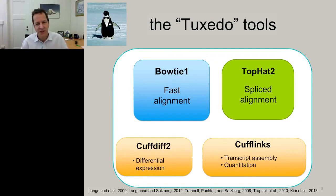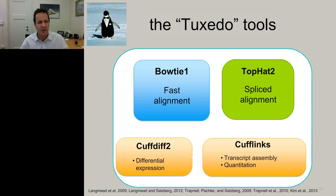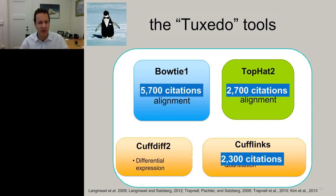My lab has developed a suite of tools handling all steps in this process. After aligning with Bowtie, you need splice-aware alignment to account for introns. Then alignments are assembled using Cufflinks—developed by my former student Cole Trapnell, now at University of Washington—which also quantitates transcripts. A fourth program, CuffDiff2, also by Trapnell, identifies differentially expressed genes between experiments. All these papers have been cited enormously—over 2,000 for Cufflinks and over 5,000 for Bowtie.